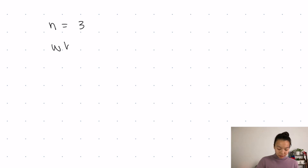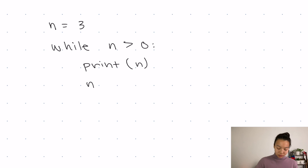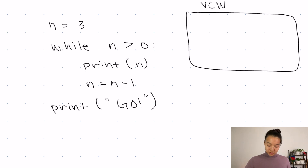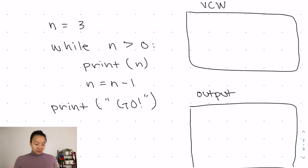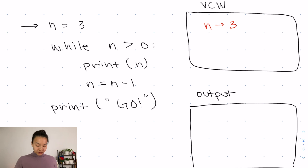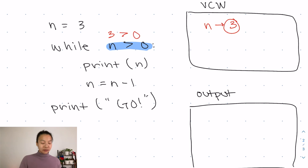Let's say n is equal to 3. In my loop, I'm going to say: while n is greater than zero, print n, and then do n equals n minus one. And then at the very end, print go. In our virtual computer world, n is set to 3. Our condition is while n is greater than zero — right now n is 3, is 3 greater than zero? That's true.